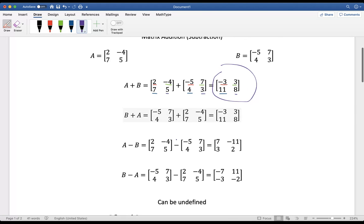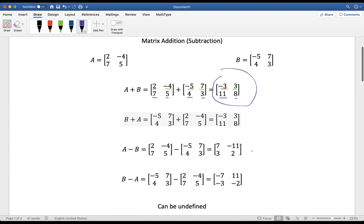But when it comes to subtraction, we got to be careful. Just like with normal numbers, when you subtract, the order does matter. So if I was to do A subtract B, two minus, now watch your signs, minus a negative five is adding five, we get seven for that first element in the first row, first column.